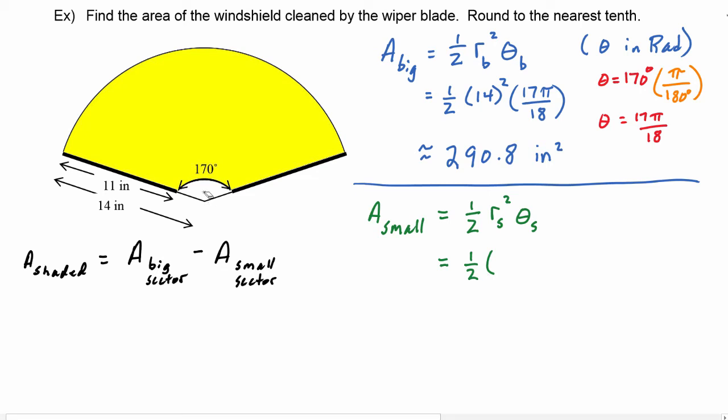Remember, the small sector starts here and goes to here, so that distance is actually 3. So the radius of the small sector that we enter in our equation here is going to be 3. We square it. It goes through the same angle, 17π over 18.